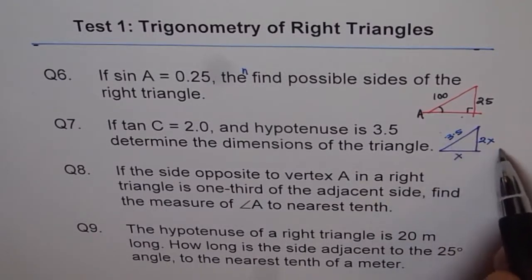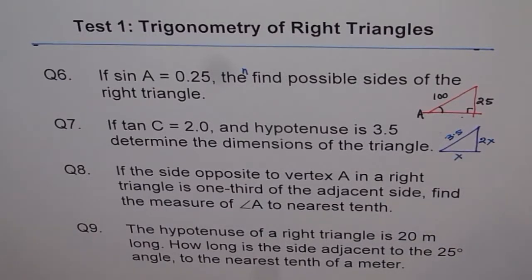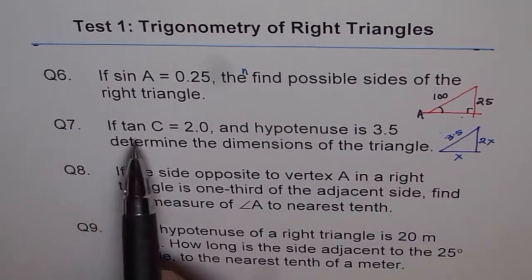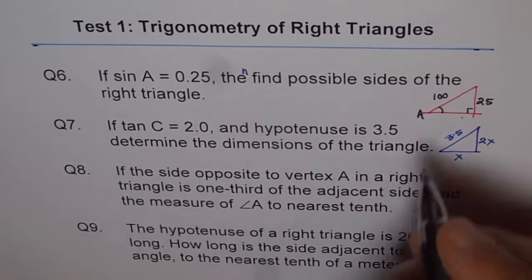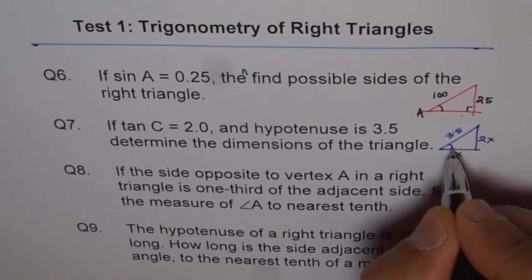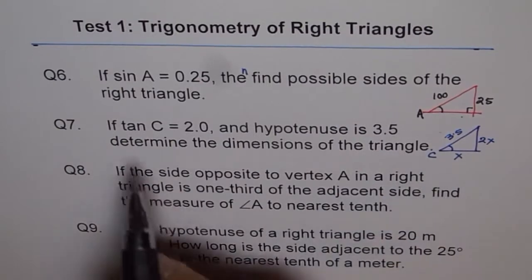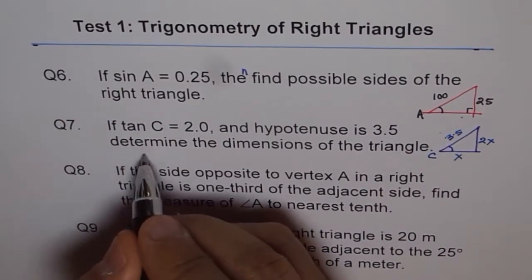The other way is: you know tan C equals 2, so we are assuming this to be angle C. We can find what angle C is, so we can say angle C equals tan inverse of 2.0, so we get angle C.